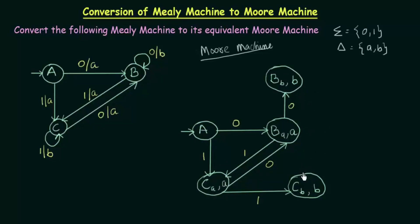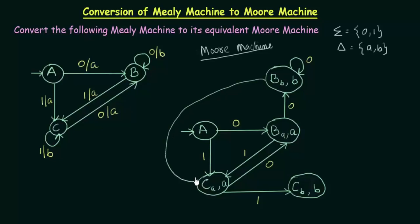We have created two new states and have not yet defined what happens to them on inputs 0 and 1. Starting with state BB: since it is a B state, I use the original B from the Mealy machine. On input 0, B goes to B itself giving output B, so BB goes to BB itself. On input 1, B goes to C giving output A, so I send BB to state CA which gives output A. We have now completed state BB.